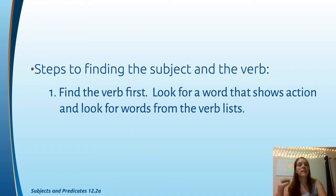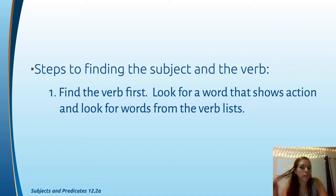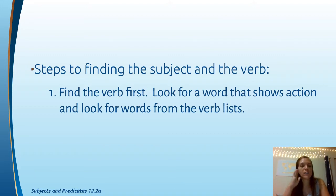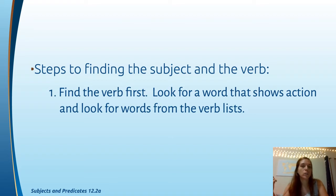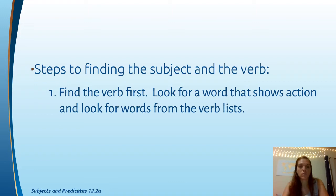Steps to finding the subject and verb: find the verb first. Look for a word that shows action, and look for words from the verb list — because remember, there are helping verbs and linking verbs. Your verbs include: am, is, are, was, were, be, being, been, has, have, had, do, does, did. They don't look like action words, but they are verbs.